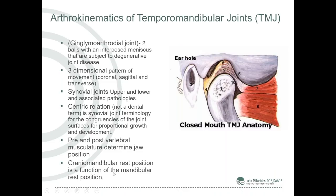Here's the condyle, here's the articular surface, here's the meniscus, here's the superior portion of the external pterygoid muscle, and this is the inferior portion. When you open your mouth, these muscles interact and pull everything forward. When the meniscus is displaced, it'll displace usually forward and be lodged there, so the condyle will move up and actually be blocked by the posterior portion of the meniscus, and you can't get your mouth open.